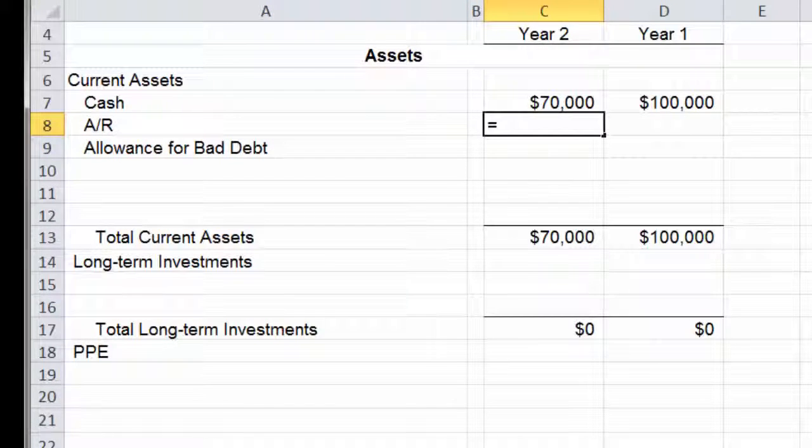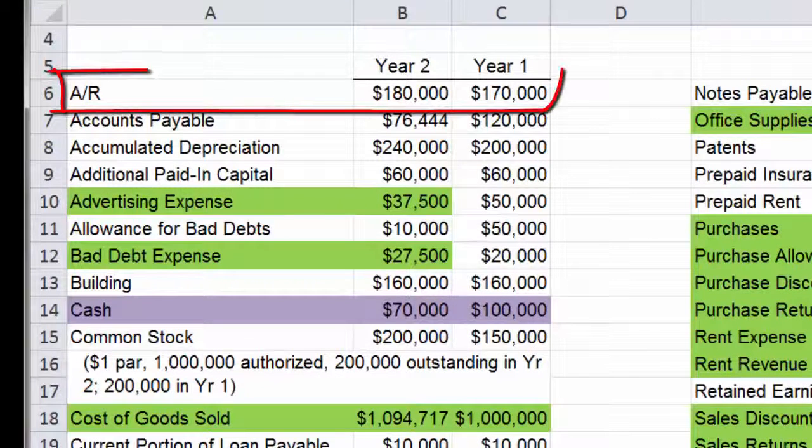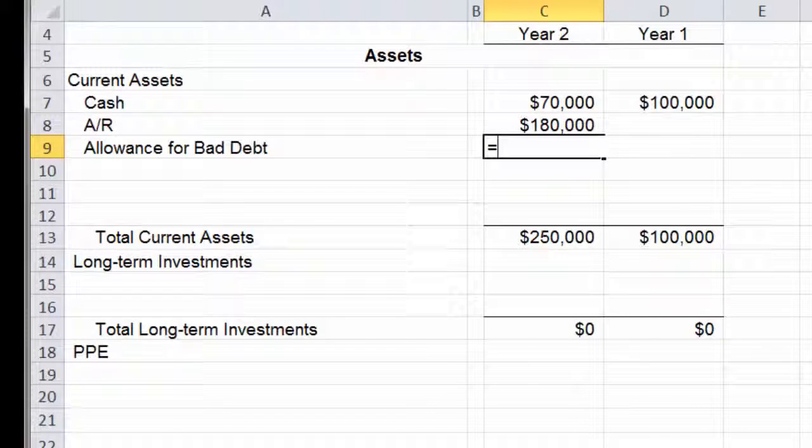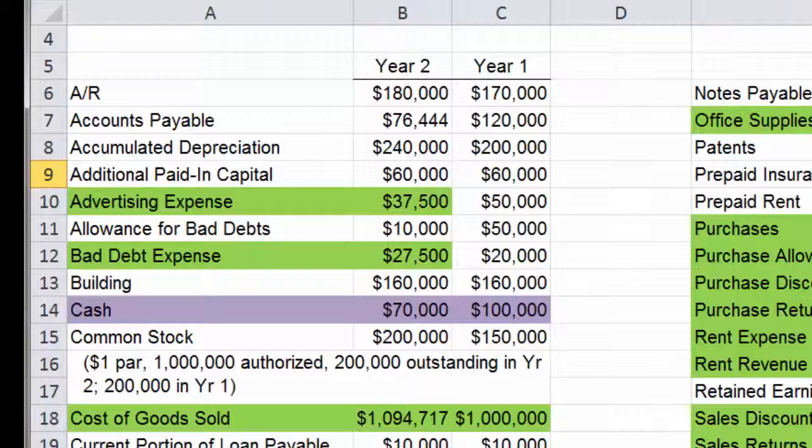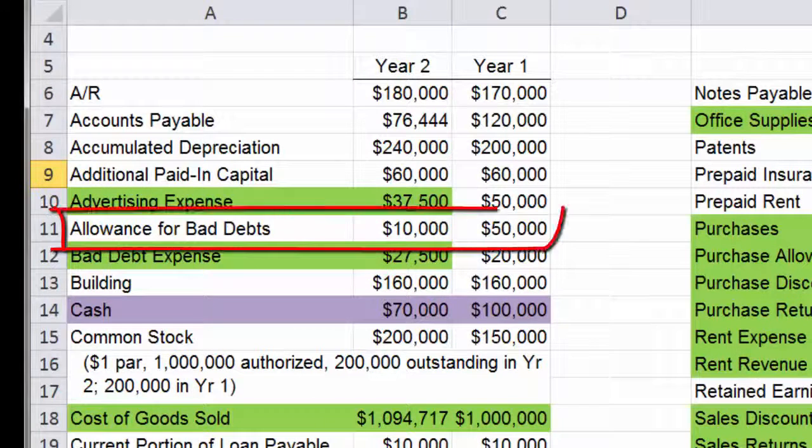So I'm going to go back to my raw data tab and accounts receivable is right at the top. So I'm going to click on that and get the $180 here in B6. And the allowance for bad debt is just below that, a couple of lines below. There's my allowance for bad debt, $10,000 here in B11. And I'm going to hit enter.